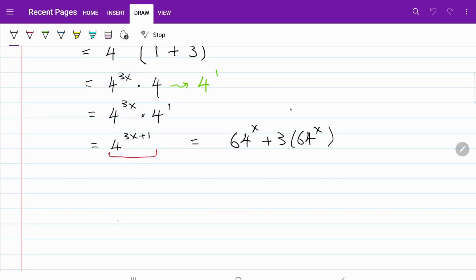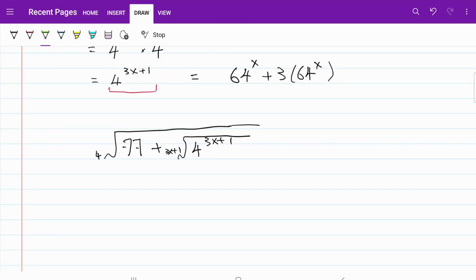now our original expression becomes 77 plus 4 to the power of 3x plus 1 at the root of 3x plus 1. Keep in mind the second rule that we posted above, which states that a to the power of m at the root of n can be expressed as a to the power of m divided by n.